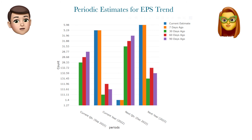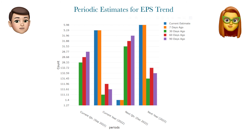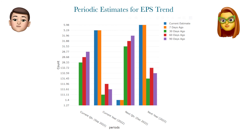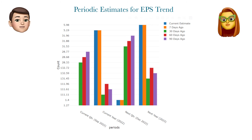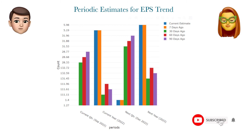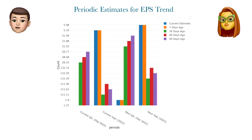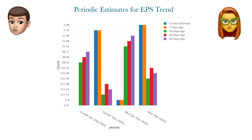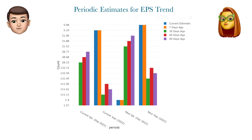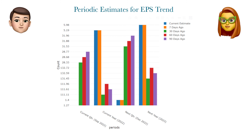What counts as a good EPS will depend on the recent performance of the company, the performance of its competitors, and the expectations of analysts who follow the stock. Sometimes a company might report growing EPS but the stock might decline in price if analysts were expecting an even higher number. Likewise, a shrinking EPS figure might nonetheless lead to a price increase if analysts were expecting an even worse result.